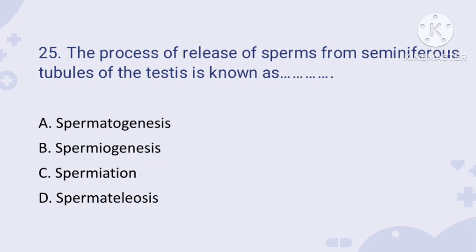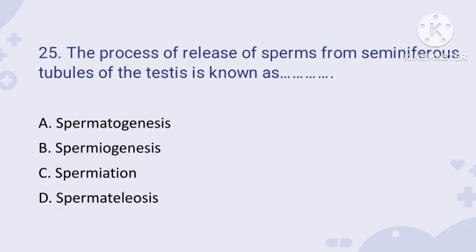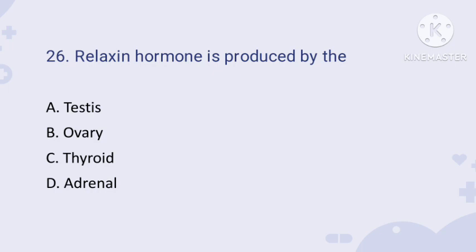Question number twenty-five — also most expected this year: the process of release of sperms from the seminiferous tubules of the testis is known as what? Most would write spermatogenesis, but the question is about release of sperm, not formation. The correct answer is option C: spermiation. Spermatogenesis is formation of sperms, spermiogenesis is conversion of spermatid into functional sperm, and spermiation is the release of sperms.